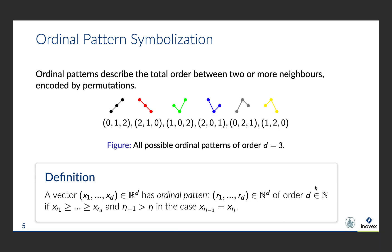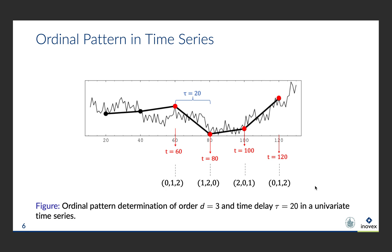Next, we introduce ordinal pattern symbolization needed for the definition of permutation entropy. Ordinal patterns describe the order between two or more neighbors encoded by permutations. The figure shows all possible ordinal patterns of order 3, meaning all possible permutations concerning the order between three neighbors. To symbolize a time series, each time point t is assigned its ordinal pattern of order d. To assess the overarching trend, delayed behavior is of interest. The time delay tau from the set of natural numbers is the delay between successive points in the symbol sequence. Different delays show different details of the structure of the time series. The figure visualizes the ordinal pattern determination of order 3 and time delay 20 at four different time points in a univariate time series. Note that all time steps have to be considered, not only the ones of the shifting delay.